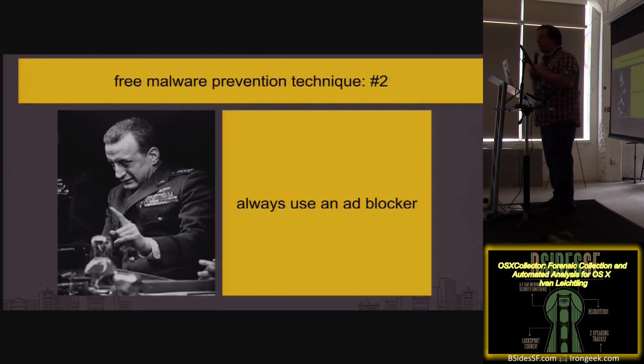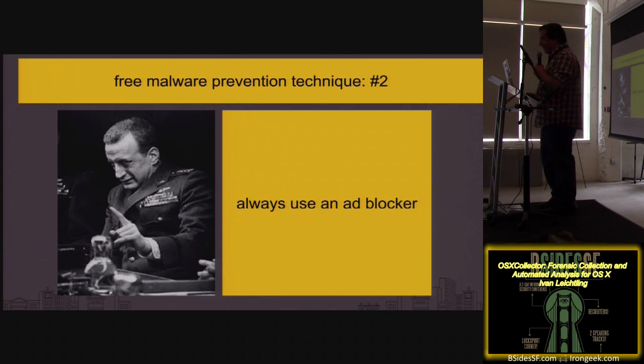Malware prevention technique number two: use an ad blocker. Can't stress this enough — it actually works. Yes, I'm from Yelp, and yes, this is how we get our revenue. What I suggest is Ad Block Pro and then you add us to your whitelist — and then that allows everyone in the room to keep winning.